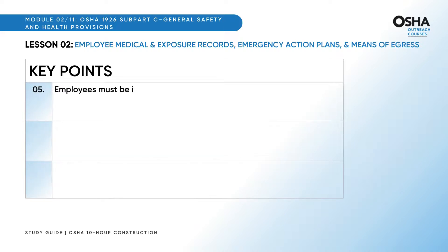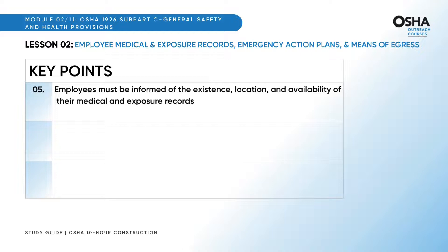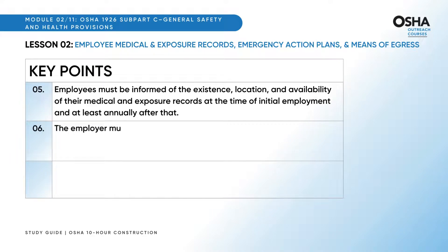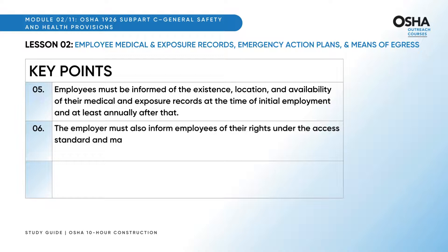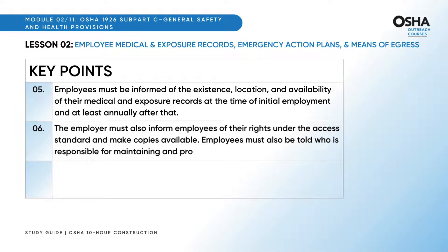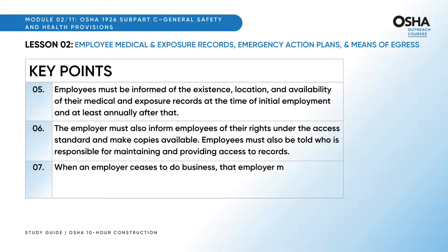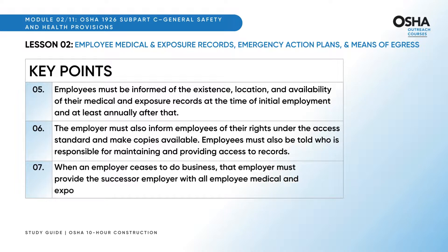Employees must be informed of the existence, location, and availability of their medical and exposure records at the time of initial employment and at least annually after that. The employer must also inform employees of their rights under the access standard and make copies available. Employees must also be told who is responsible for maintaining and providing access to records. When an employer ceases to do business, that employer must provide the successor employer with all employee medical and exposure records.